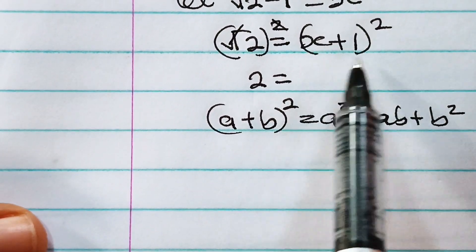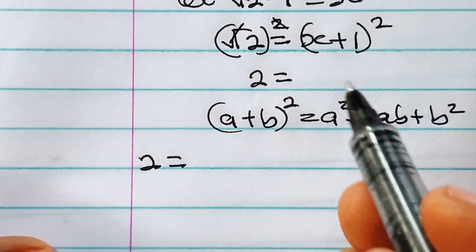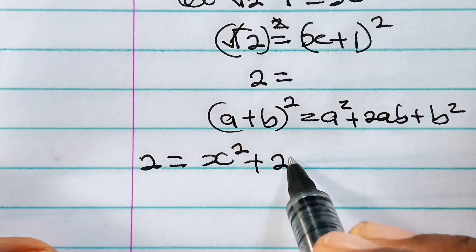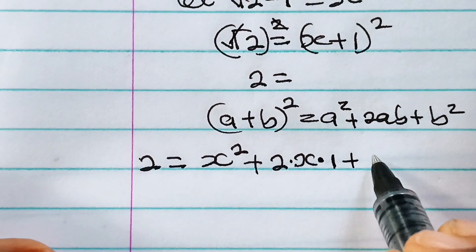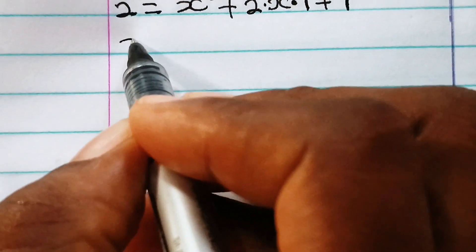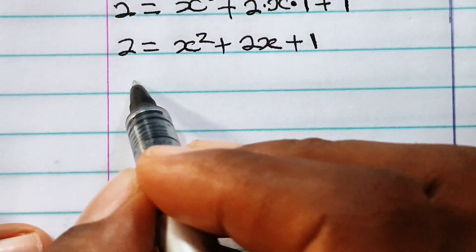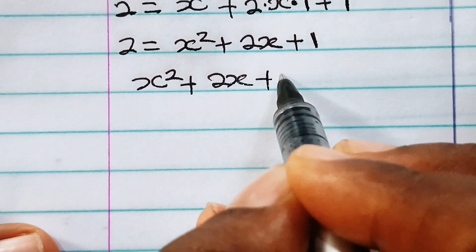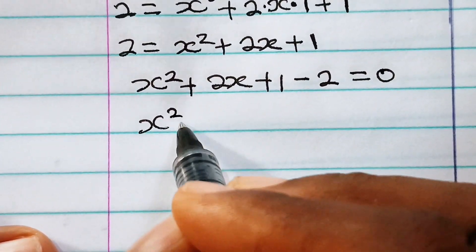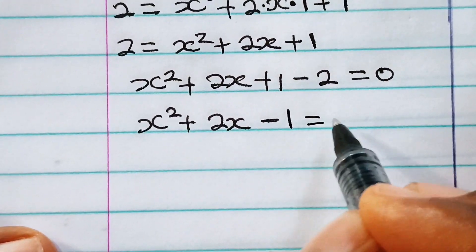So that means we can express the right-hand side of this equation as: 2 is equal to a squared, that is x squared, plus 2ab, that is 2 multiplied by x multiplied by 1, then plus b squared, that is plus 1 squared. Then we have 2 is equal to x squared plus 2x plus 1.